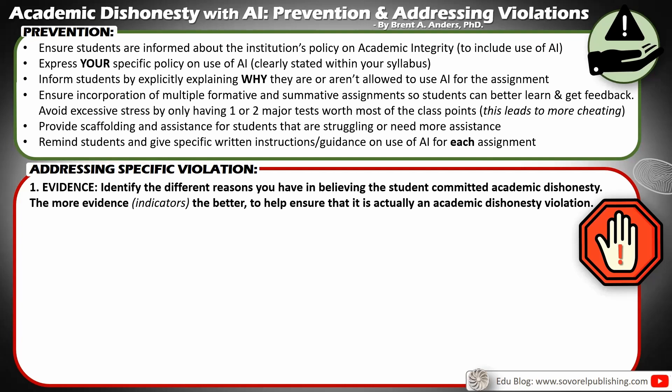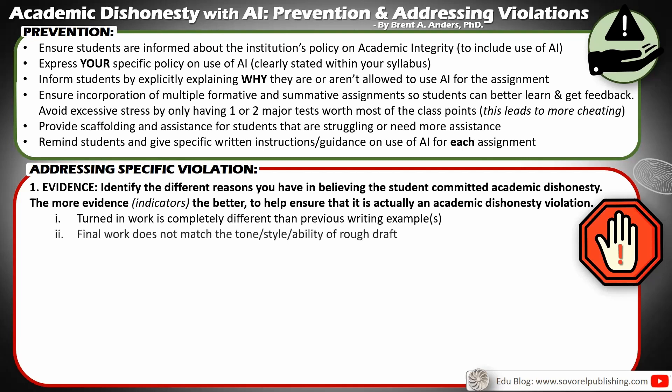Some examples of indicators would be that the turned-in work is completely different than previous writing examples. In class they've been doing different types of writing, and now when they turn in their work it looks completely different — utterly different, as if written by someone or something else. Another indicator: the final work does not match the tone, style, or ability level of the rough draft. We often ask for a rough draft in order to give feedback, and if the final looks nothing like that rough draft and the ability level has jumped leaps and bounds, that might be an indicator as well.